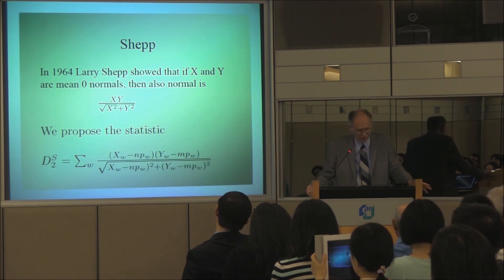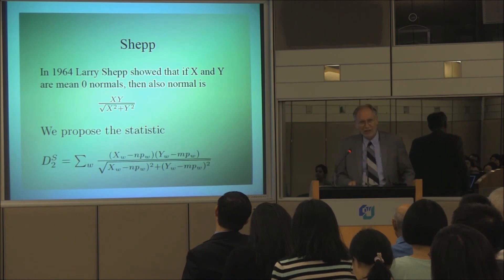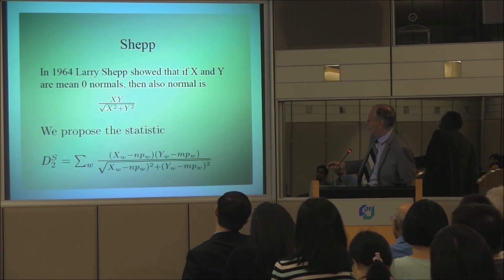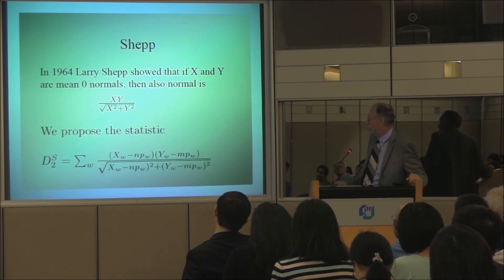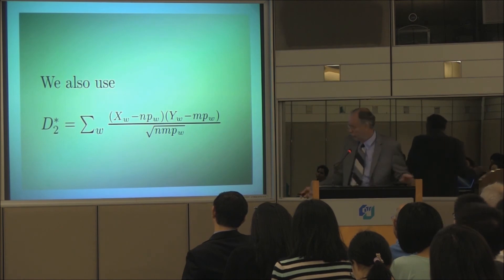In 1964, when he must've been a baby, he had this problem in the SIAM journal that filled or included in volume two. And he said, if X and Y are mean zero normals, then X times Y divided by the square root of the sum of squares is also normal. And we liked that a lot because this looks like a very sort of self-normalizing statistic. And so we added a Shep version of our normalized statistic to this. And this is really the version that gets used the most.